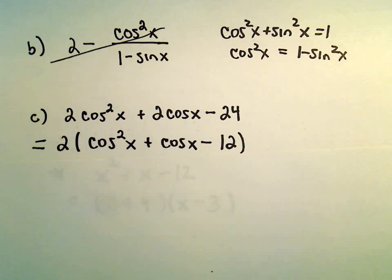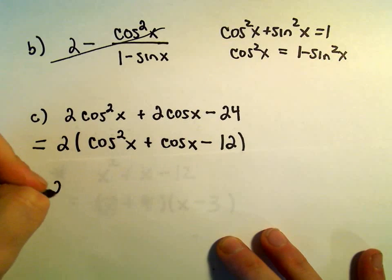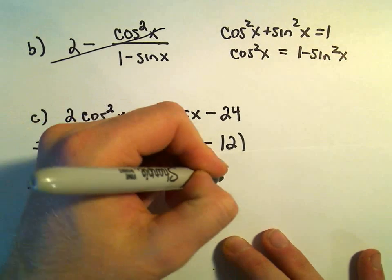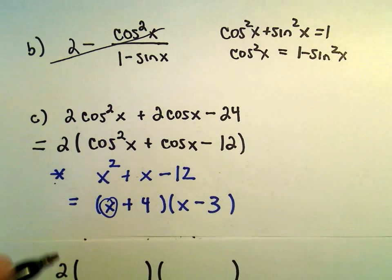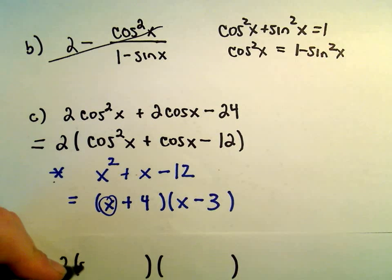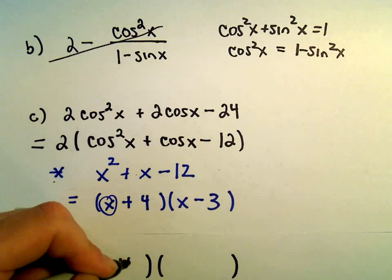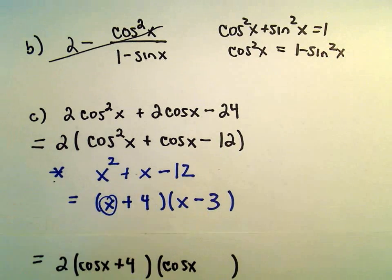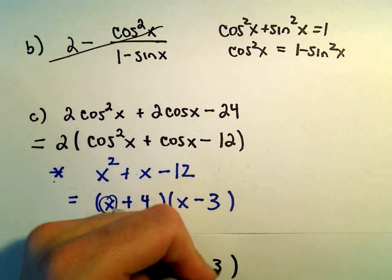So the same way, to factor this expression, instead of just x, we'll have cosx + 4, and then we'll have cosx - 3.